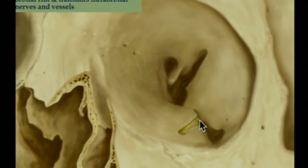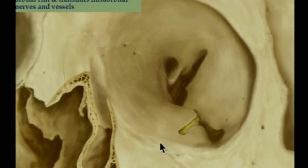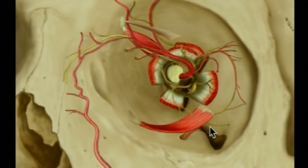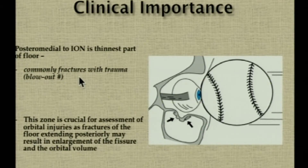The infraorbital nerve passes from the posterior part of the inferior orbital fissure, into the infraorbital groove, then through the canal, and exits through the infraorbital foramen — one centimeter below the rim. During dissection, care must be taken to avoid damaging the infraorbital nerve, as this can cause numbness of the cheek and upper teeth, though patients must be counseled when it is involved in the fracture. The infraorbital artery also passes through this groove and can cause significant bleeding. This infraorbital nerve and artery area divides the orbit into a medial thin part and a lateral thick part, making it the area most commonly involved in orbital blowout fractures.